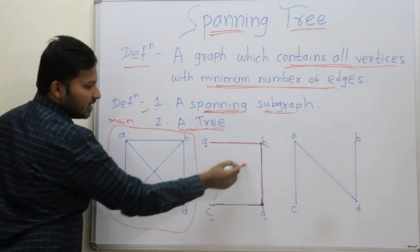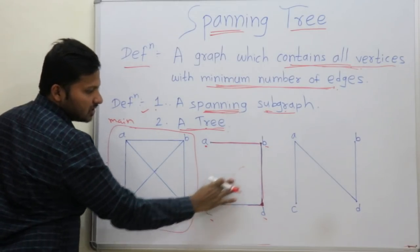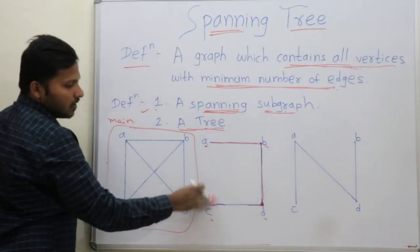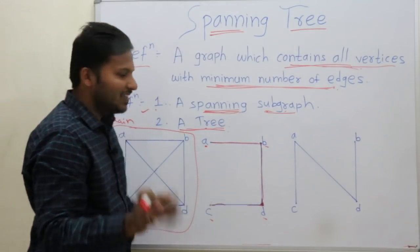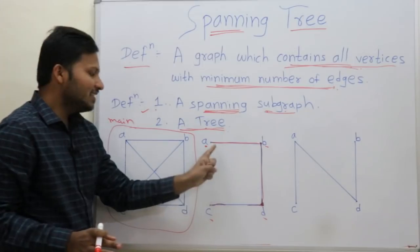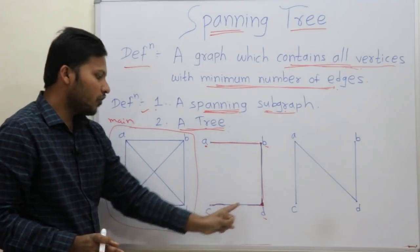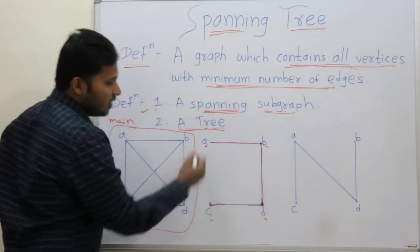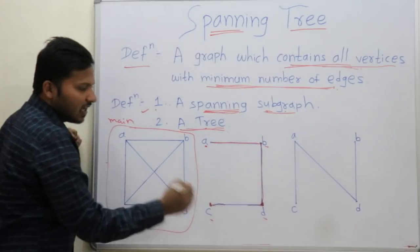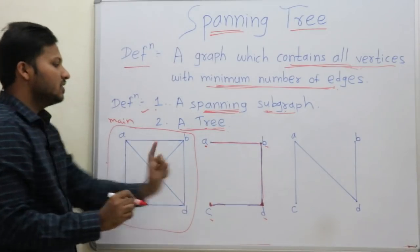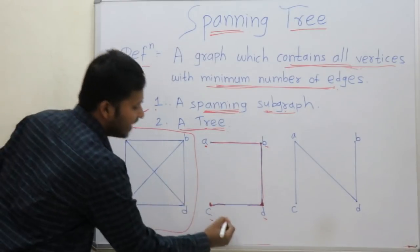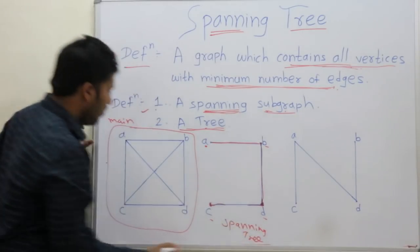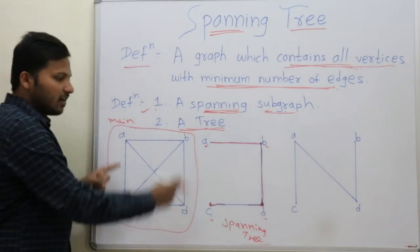Or this edge — that forms a cycle again. So if you want to avoid a cycle, this is the final number of edges. All the vertices are covered here, so this is one spanning tree of this graph.